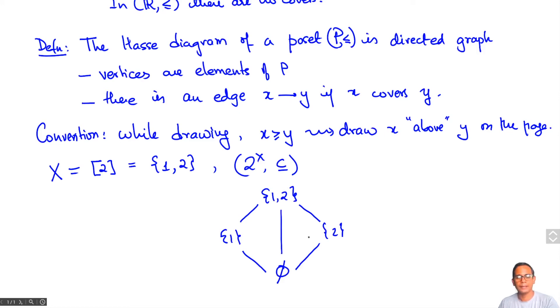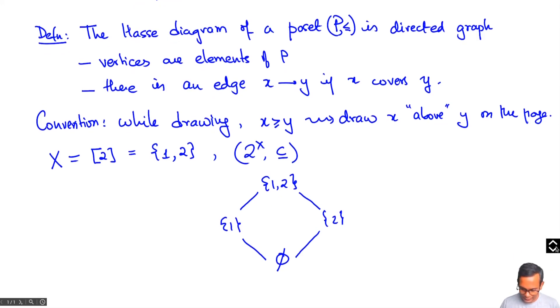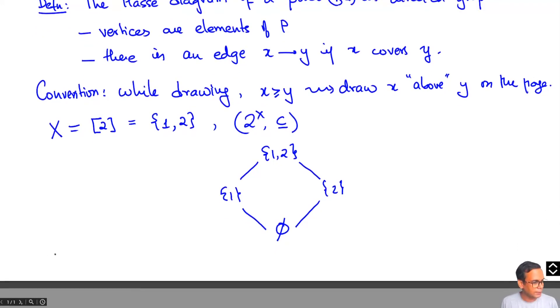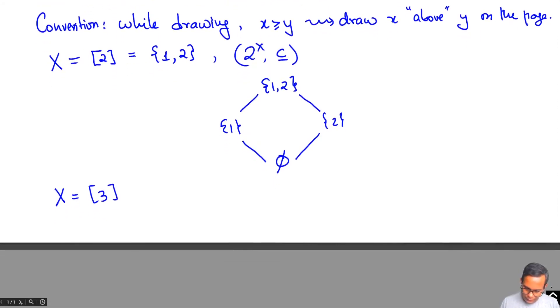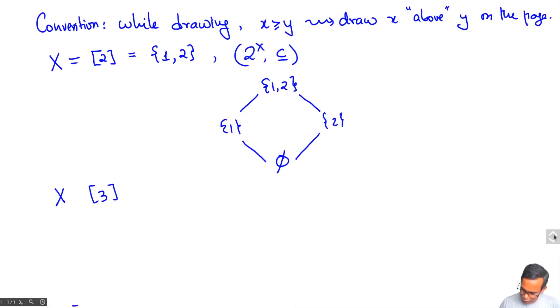There's no edge like this here in this Hasse diagram. Let's do a slightly more complicated example. Let's take now x to be {1, 2, 3}. We have quite a few more elements. Now we have 8 elements in our partially ordered set and we can draw it as follows.